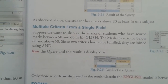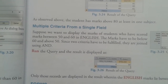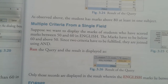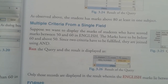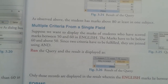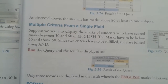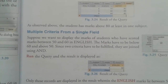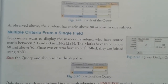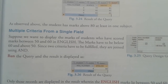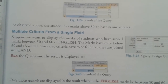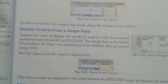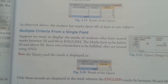Now, what are forms? A form is a type of database object that you can use to create a user interface for a database application. It provides an easy and user-friendly way to enter, edit, and view data. All of you have sometimes filled a form at school, so you know the basic meaning of a form.